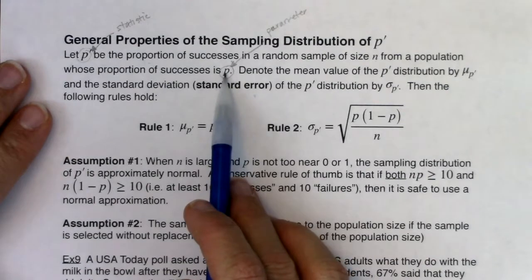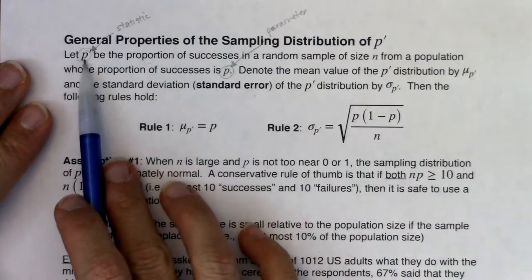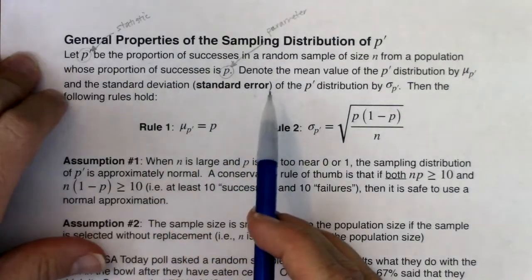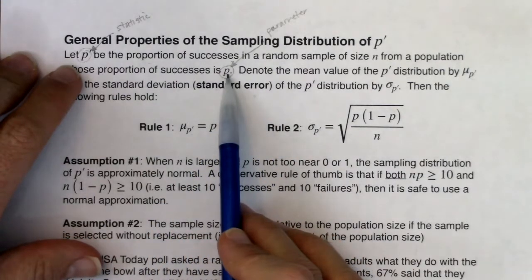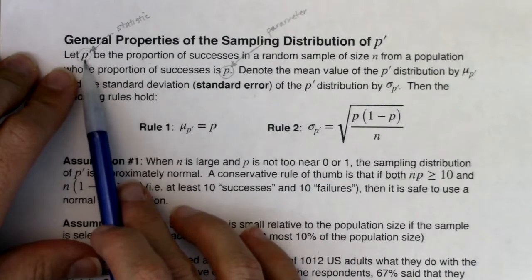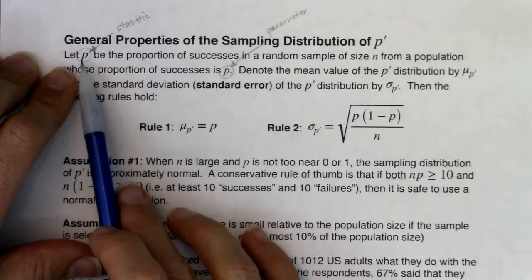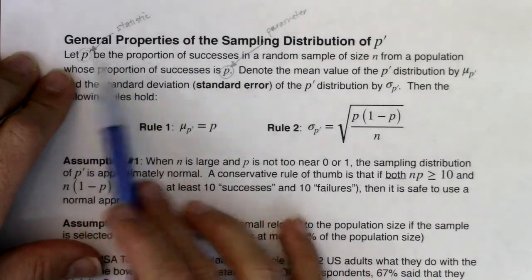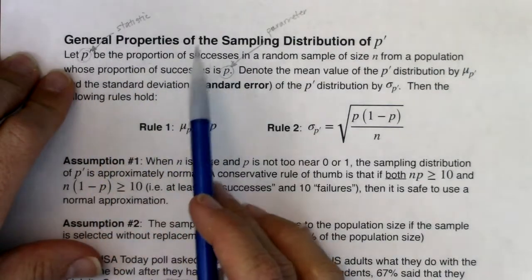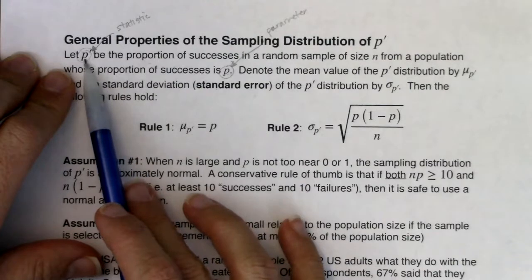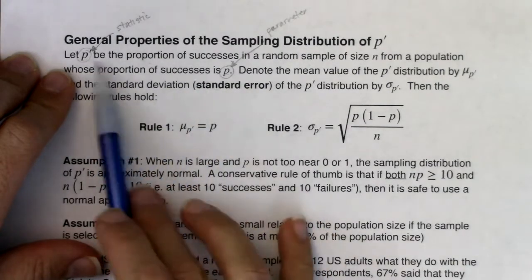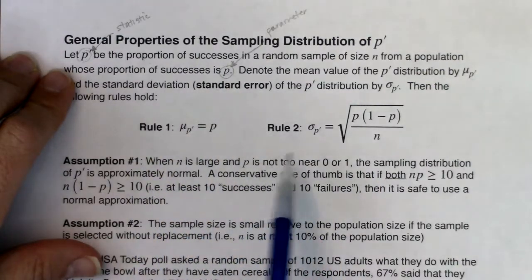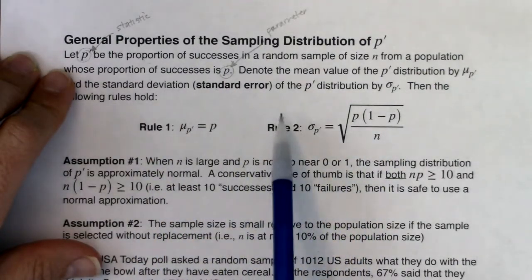What we do instead is take a statistic and say that's a pretty good guess for the parameter. We give ourselves a little wiggle room — that's going to be called margin of error once we get to the next chapter. We make our best guess: we go from our statistic and infer to our parameter. There are rules that govern this, and these will help us when we get to chapter 8.